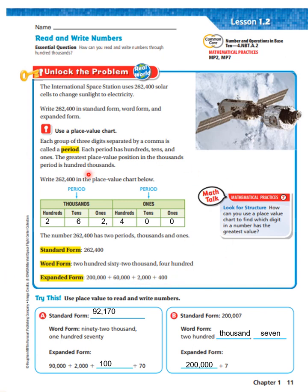Very important, boys and girls — if you forget what standard form, word form, and expanded form are, make sure you come back to this page. It says try this — use place value to read and write numbers. The word form is ninety-two thousand one hundred and seventy. In standard form that's 92,170. In expanded form: 90,000 plus 2,000 plus 100 plus 70. Now, standard form two hundred thousand seven — word form is two hundred thousand seven, and expanded form is 200,000 plus 7.